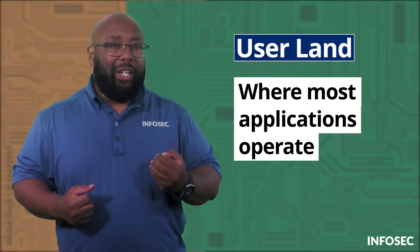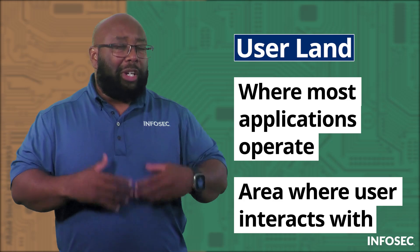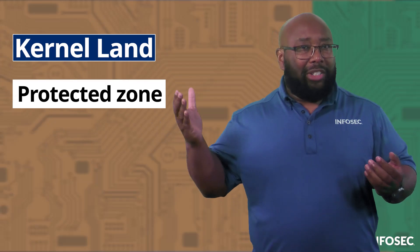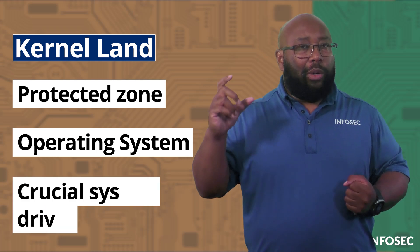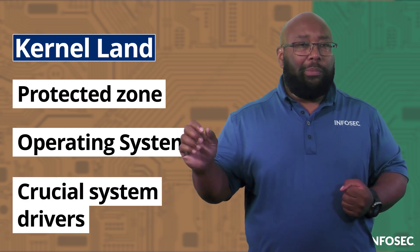User land is where most applications operate, and it's the area you as a user interact with. Kernel land is a protected zone where the operating system like Windows and crucial drivers that enable your system to communicate with hardware — like your network cards or your USB drives — operate. This protection is essential because even a small error in kernel land can cause the entire system to crash.